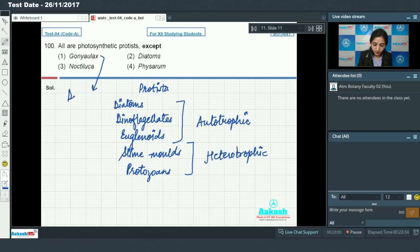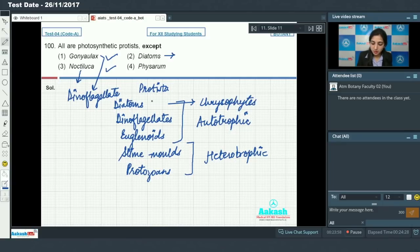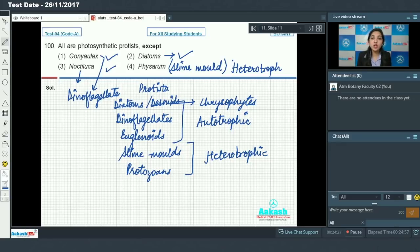Now Gonyaulax is a dinoflagellate. Dinoflagellate is photosynthetic. Noctiluca is also a dinoflagellate. So it is also photosynthetic. Diatoms belongs to chrysophytes. In chrysophytes diatoms and desmids are included. So diatoms are photosynthetic. Physarum is a slime mold. So slime molds are heterotrophic. Which one of these following is not a photosynthetic protista? Physarum is the answer. So answer to this question is option number 4.